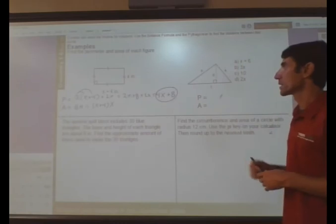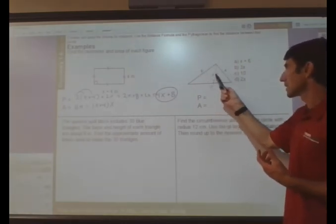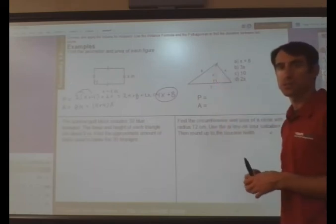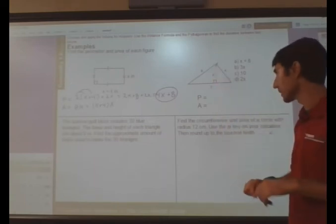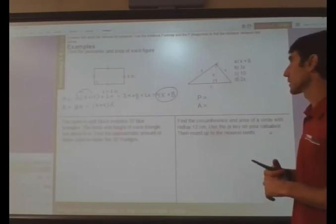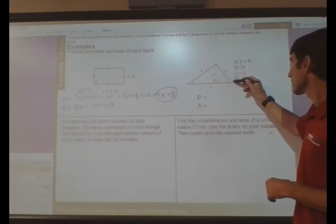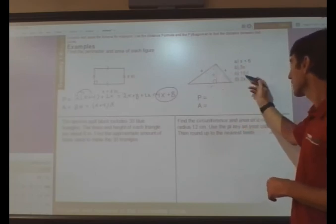For the second example, we have a triangle. And we have a, b, c, and d. d being the perpendicular distance from the base to the height. All right. So, let's take a look at this. a is x plus 6, b is 3x, c is 10. So, for the perimeter, let's put all those things together.